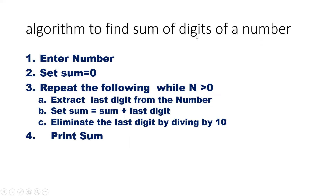The algorithm to find the sum of digits of a number. Step 1: enter number. Step 2: set sum equal to 0. Step 3: repeat the following while N is greater than 0 — extract the last digit from the number, set sum equal to sum plus last digit, eliminate the last digit by dividing by 10. These are repeated until the number becomes 0. Step 4: print sum.